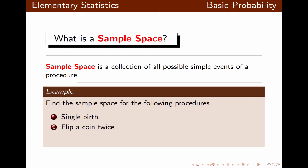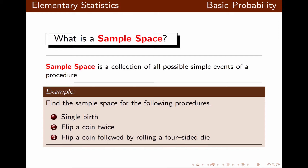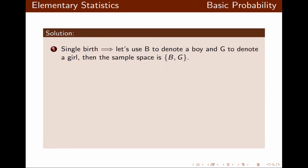We want to find the sample space for the following procedures: a single birth, flip a coin twice, and flip a coin followed by rolling a four-sided die. For a single birth, if we let B be for a boy and G be for a girl, then the sample space is the collection of B and G.